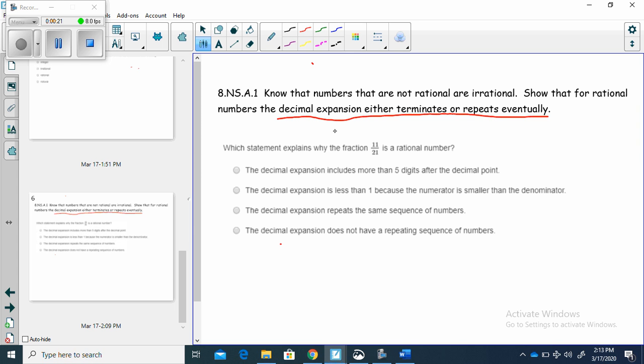There's the key. For rational numbers, the decimal expansion either terminates or repeats eventually. Which statement explains why the fraction 1121 is a rational number?